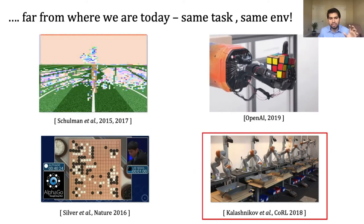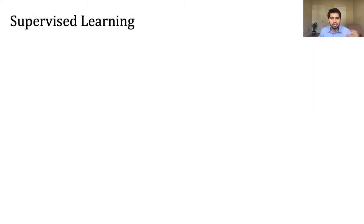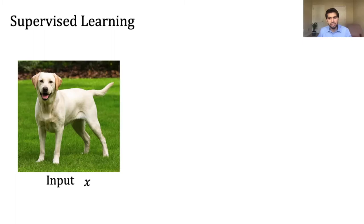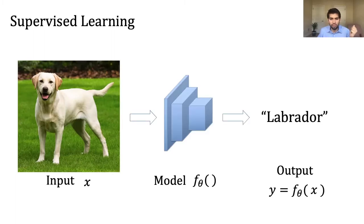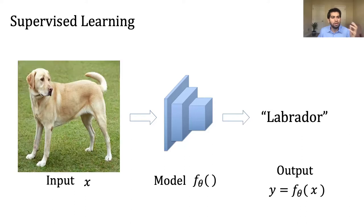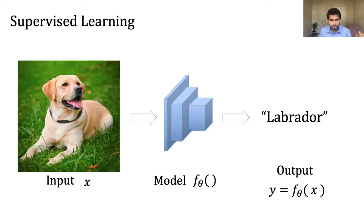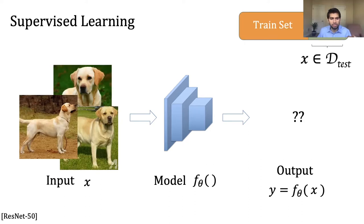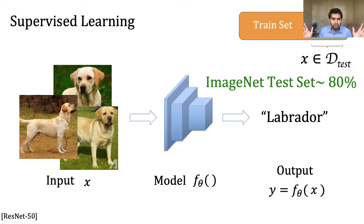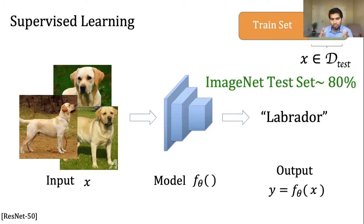Consider the simplest case: supervised learning and image classification, where we train a model on lots of images to classify something like a Labrador. The data comes from a large dataset distributed into training and test. This result — widely known and what put deep learning on the map — works really well.